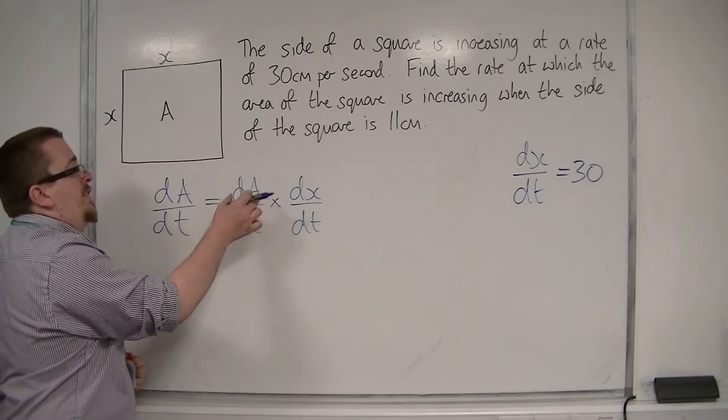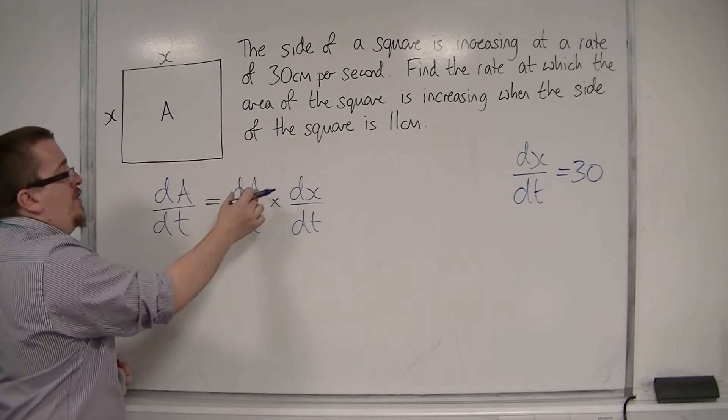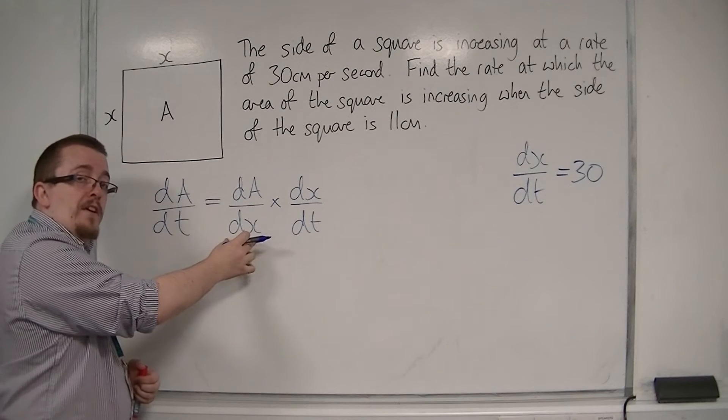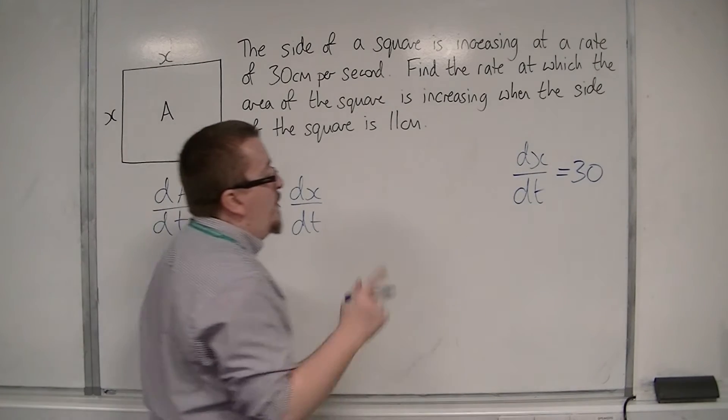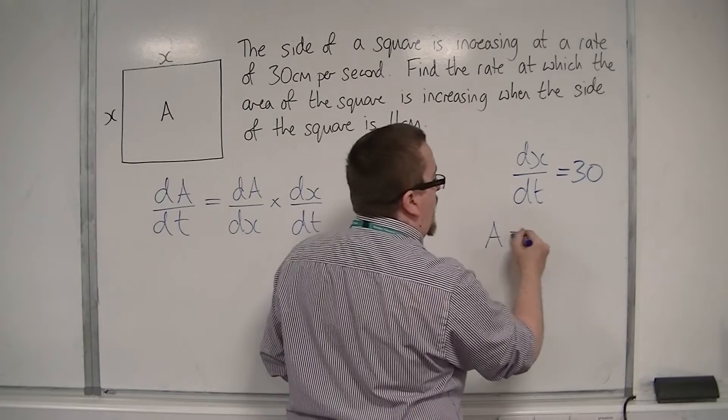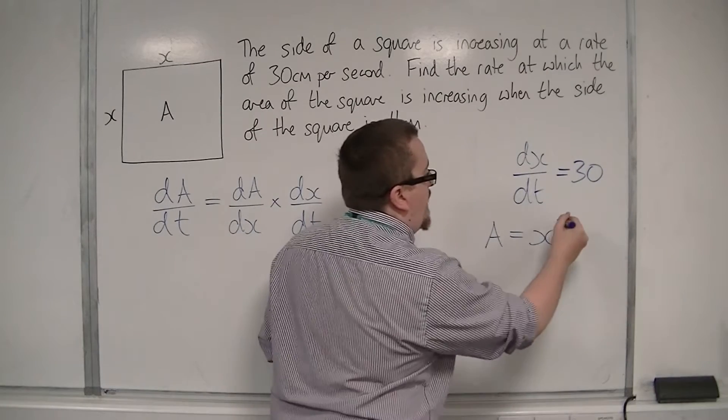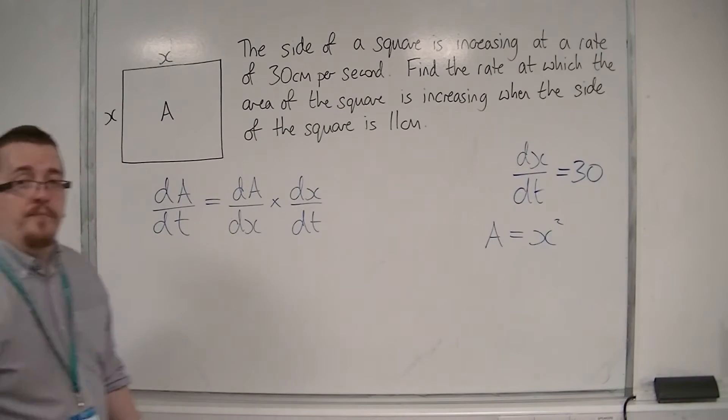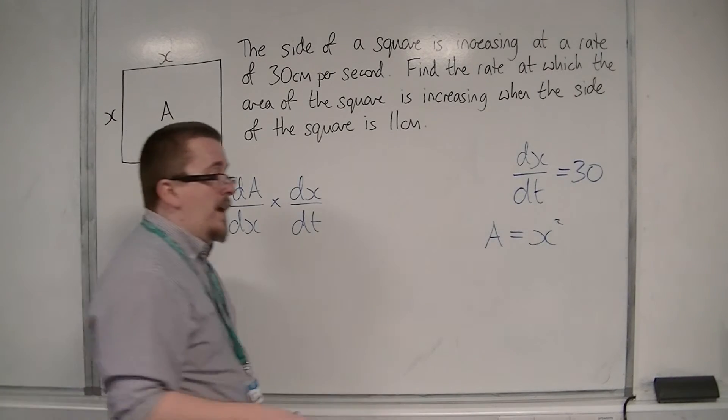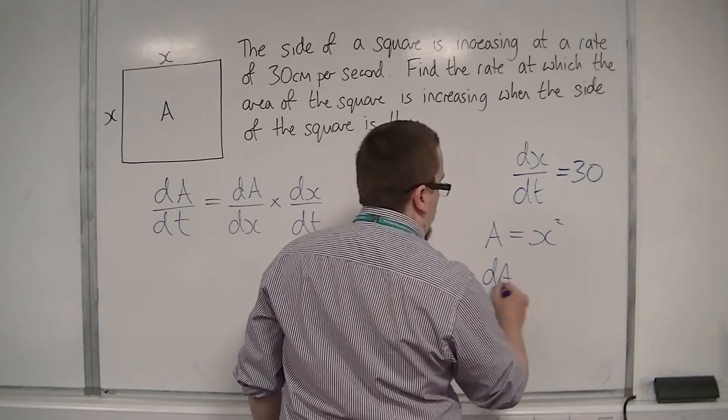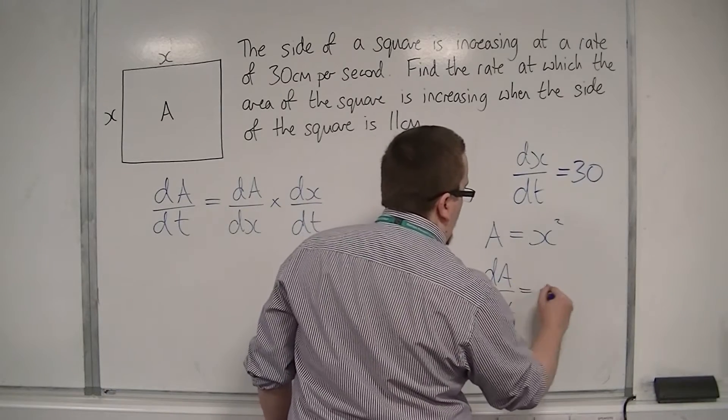Now this is the rate at which the area is changing with respect to the side, with respect to x. So we know that the area of a square would just be given as x squared, so x times x. So dA by dx would be 2x.